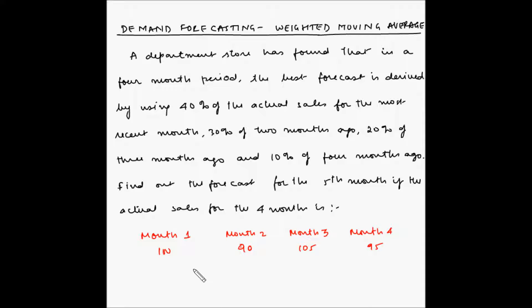Let us look at an example of demand forecasting using the weighted moving average method. A department store has found that in a four-month period, the best forecast is derived by using 40 percent of the actual sales for the most recent month, 30 percent of two months ago, 20 percent of three months ago, and 10 percent of four months ago. Find out the forecast for the fifth month.